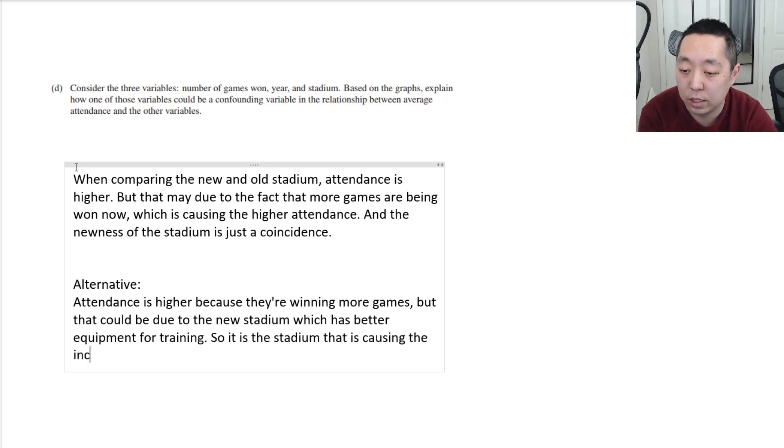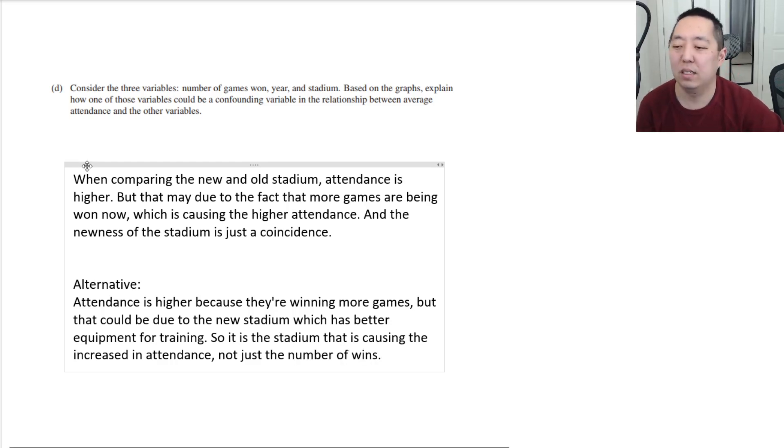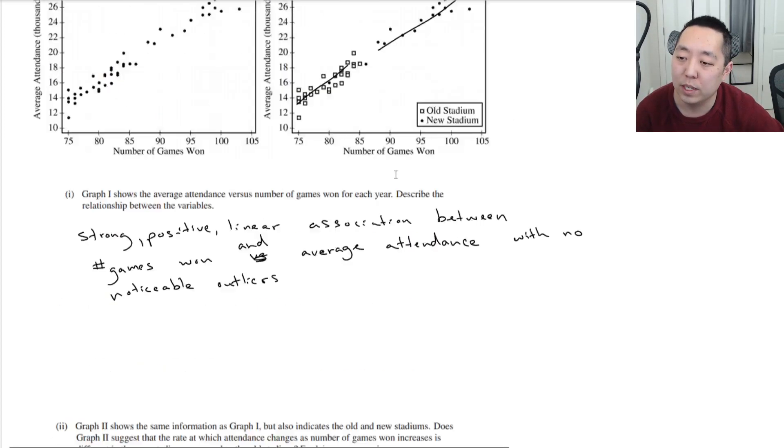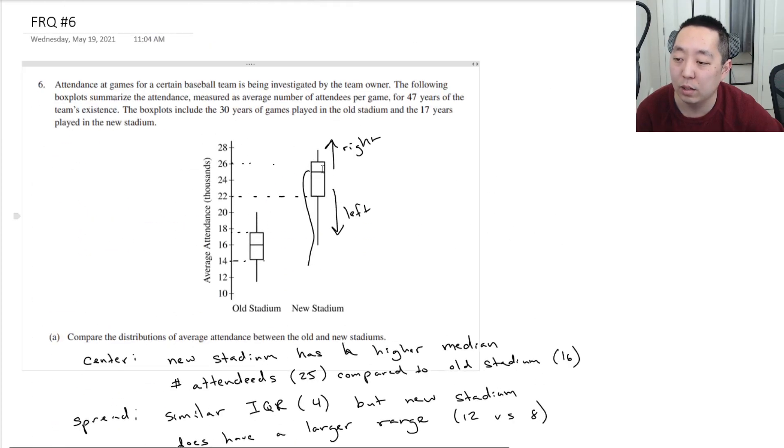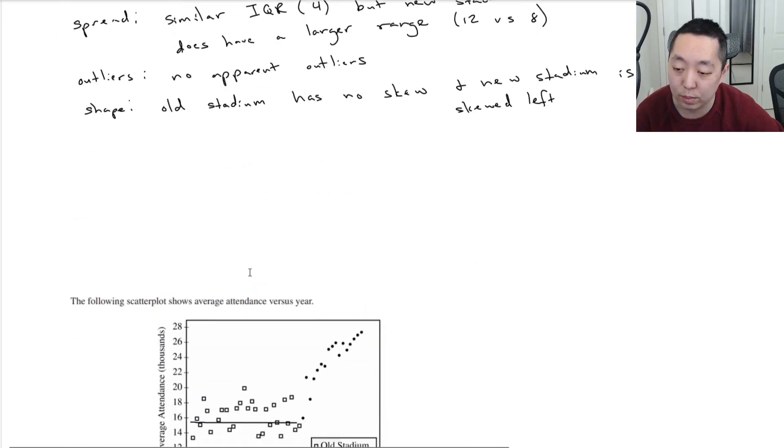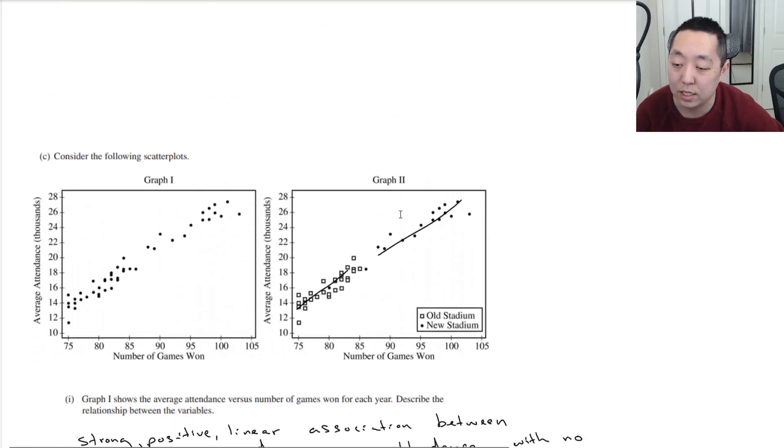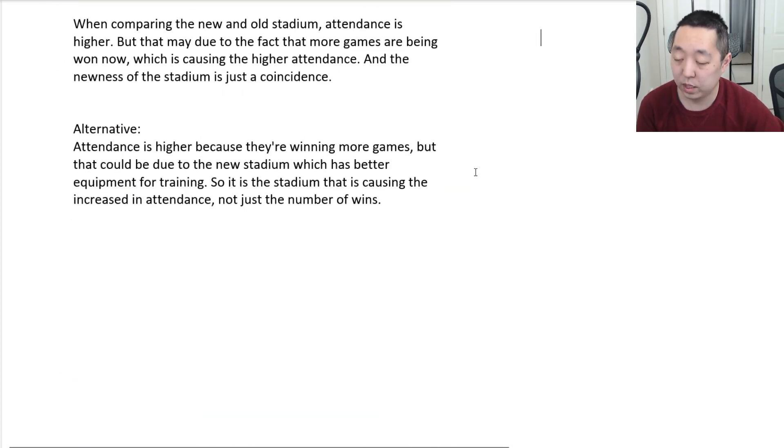So it is the stadium that is causing the increased attendance, not just the number of wins. I don't know, something like that. I kind of feel like I like the first one better in my opinion. That's the one that more naturally comes to me because when you started off the problem, you were kind of talking about, oh look, the new stadium is so much better than the old stadium. But in reality, when they start breaking it down like this, you say, oh well maybe it's just because they're winning a lot more in the new stadium than the old stadium, and that could just be a coincidence. Okay, so yeah, that's it.